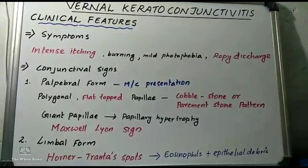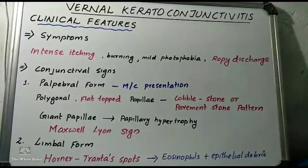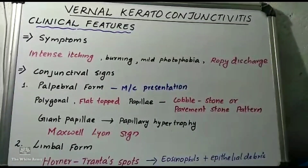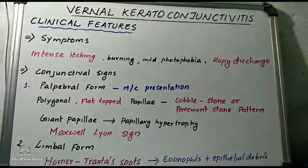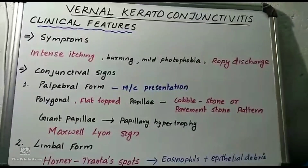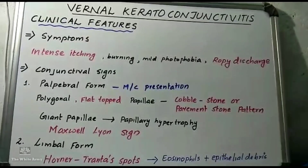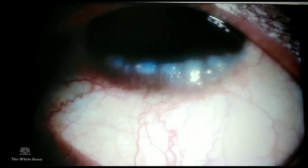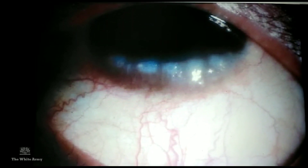The next form is the limbal form, which shows congestion of the bulbar conjunctiva. There is formation of limbal papillae around the limbus. The presence of discrete whitish raised dots along the limbus is known as Horner-Trantas spots, which represent a combination of eosinophils and epithelial debris. In this picture, you can see the Horner-Trantas spots in the limbal area.